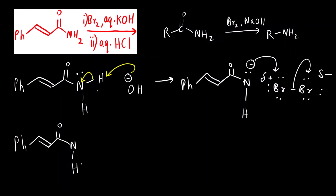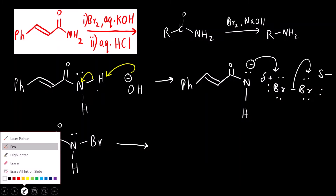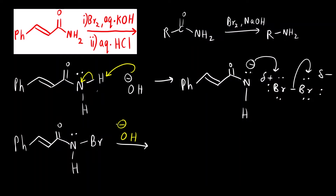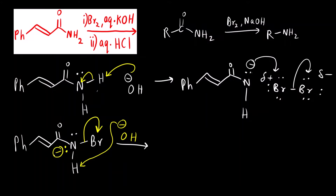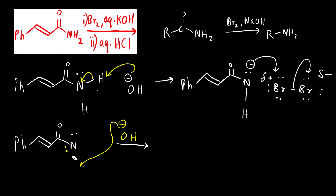The next step is very important. The base is still present, so OH⁻ abstracts the remaining proton on nitrogen. The negative charge shifts onto the nitrogen atom, and at the same time Br⁻ is lost. The electrons of the N–H bond reside on nitrogen, giving nitrogen a negative charge while Br⁻ leaves. The positive and negative charges are neutralized.